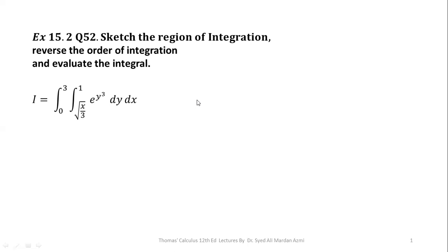In this question, the limits of y are square root of x over 3 to 1, and the limits of x are 0 to 3. In order to get boundaries, we will equate our outer and inner variable with these limits. Our outer variable is x, and the limits of x are 0 to 3. So from here, we get x equal to 0 and x equal to 3.